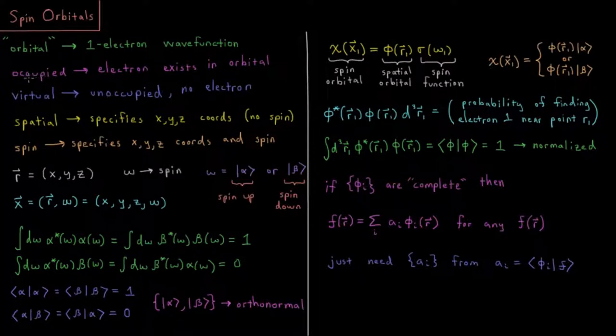We would say an orbital is occupied if an electron exists within that orbital, and we would say an orbital is virtual if it is unoccupied or there is no electron within the orbital.